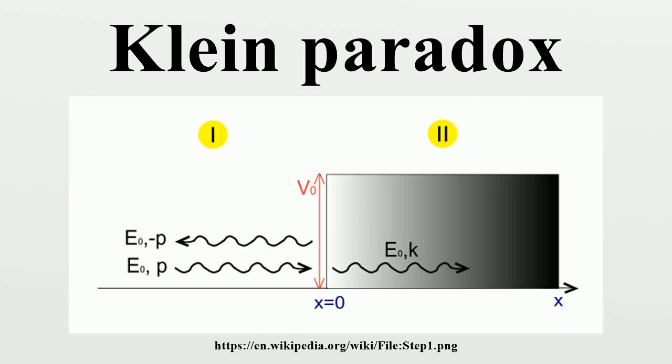In 1929, physicist Oscar Klein obtained a surprising result by applying the Dirac equation to the familiar problem of electron scattering from a potential barrier.